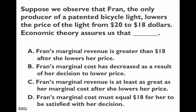Knowing those three things, let's do process of elimination. Option A says Fran's marginal revenue is greater than $18 after she lowers the price. That's clearly wrong, because for a monopolist, marginal revenue is always below the price, so when the price is $18, marginal revenue has to be less than that.